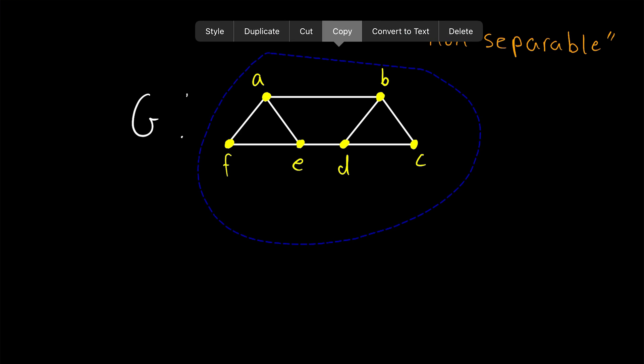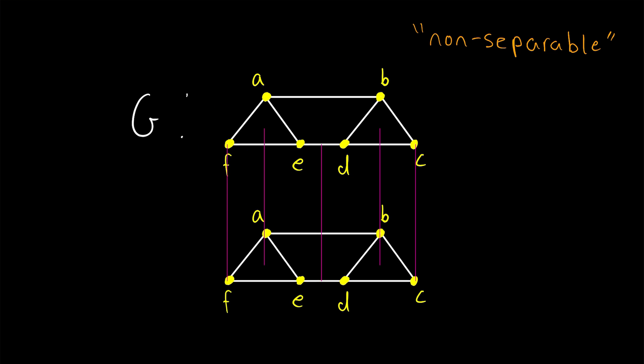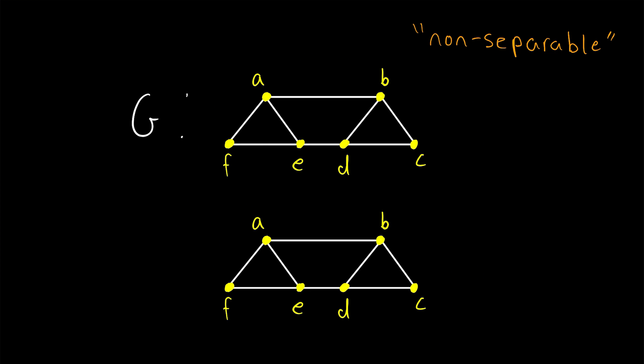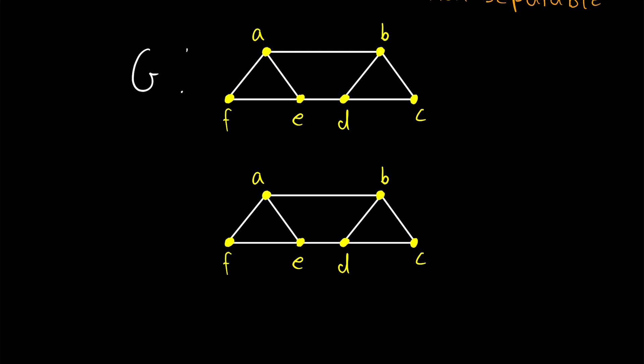Let me make a copy of this graph down below that we'll do some deletion with. So suppose we delete the vertex B, then that will leave us with this graph here. Now we can easily see if we delete the vertex D as well, we are left with a disconnected graph.